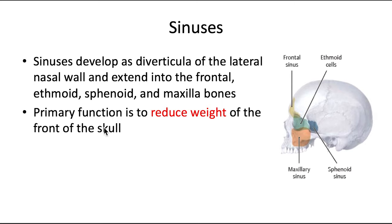The sinus pouches start out really small and expand over time. The ethmoid air cells or ethmoid sinuses are pneumatized or air-filled at birth, while the frontal sinus and the maxillary sinuses begin later and reach near maximum size by about age 20.